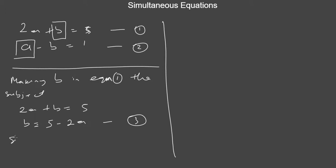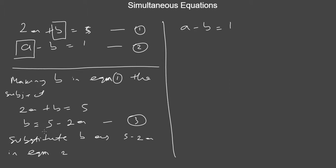The next step is to substitute b as 5 minus 2a into equation 2, since we made b the subject from equation 1. In equation 2 we have a minus b equals 1, so we replace b with 5 minus 2a. That gives a minus bracket 5 minus 2a equals 1. Expanding: a minus 5 plus 2a equals 1.